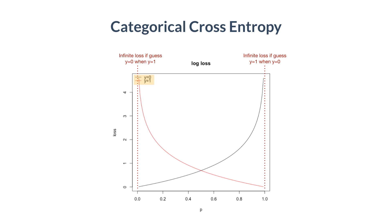I took a class at Stanford a long time ago where every question was multiple choice and we had to put our probability belief of each answer — not just the answer we thought was most likely. We were actually scored with categorical cross entropy. If we put a probability of 0 on an answer and it turned out to be the right answer, we'd get negative infinity points and fail the entire class. So we'd never put a probability of 0 unless we were 100% sure it wasn't the answer. The main point is you should always use categorical cross entropy as your loss function when doing classification.